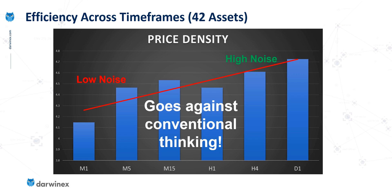Given that this seems to go against conventional thinking, does that mean we shouldn't use the price density indicator and should instead use the efficiency ratio? Let's hold off before making any decisions. Just as I alluded to previously, we should test things out and not just assume that what the wider community says is fact. Instead, let's base our decisions on factual information from our own research. We're currently looking at average noise values across all assets — let's now take a look at how this compares when we look at individual assets.